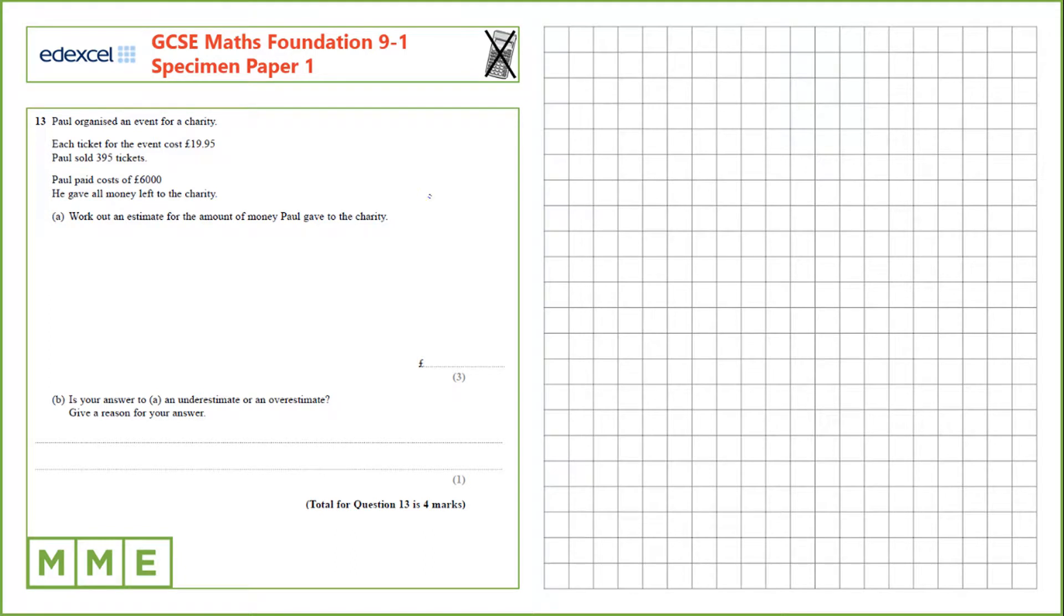Question 13. Paul organised an event for charity. Each ticket cost £19.95 and Paul sold 395 tickets. Paul paid costs of £6,000 and he gave all of the remaining money for charity. Work out an estimate for the amount of money Paul gave to the charity.